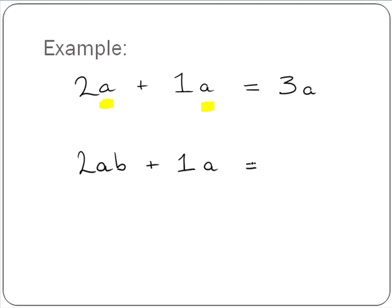But in the second one here, the first term contains AB and there's no B in the second term. So we cannot add these because they are not like terms.